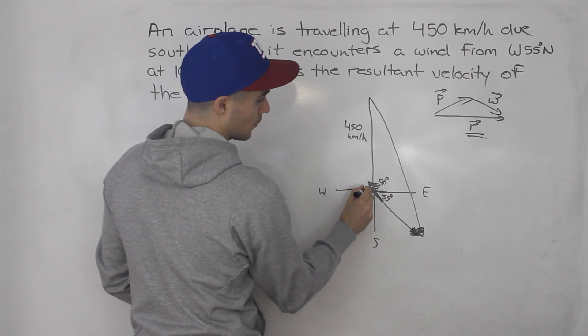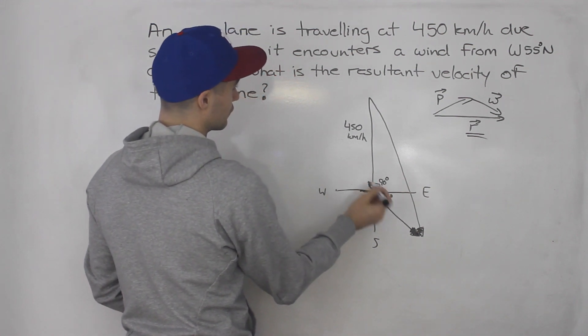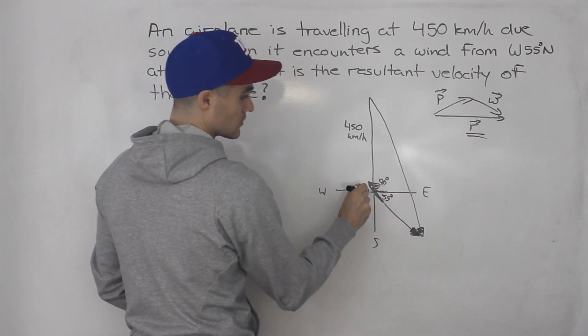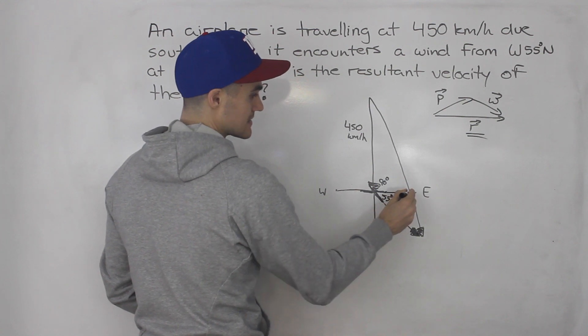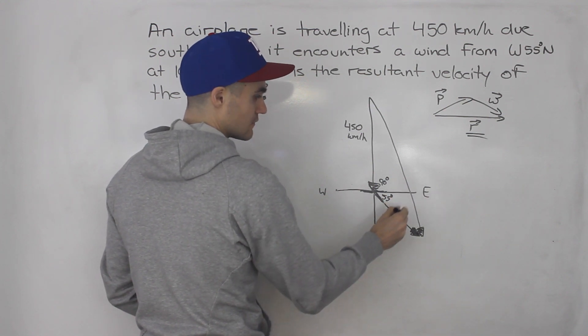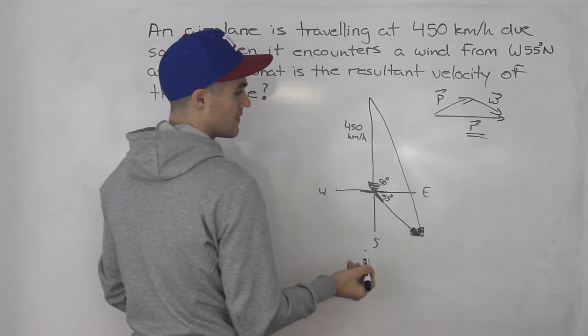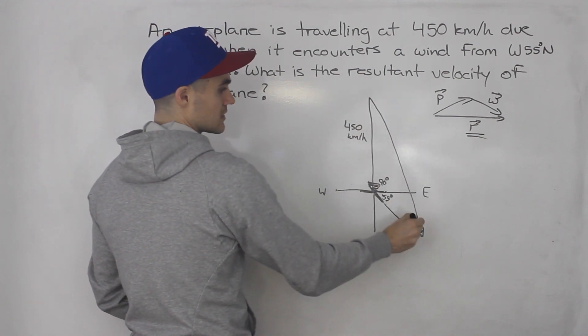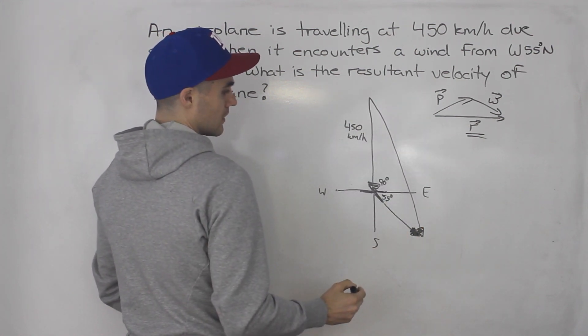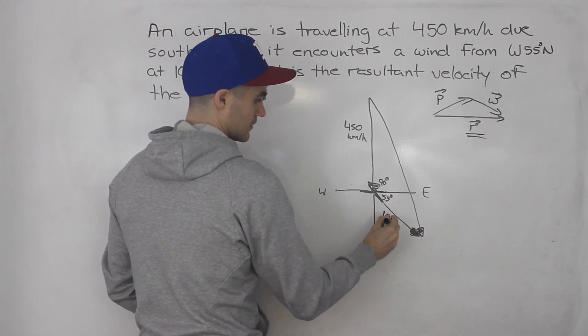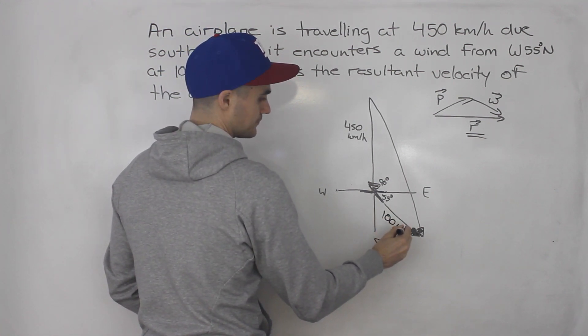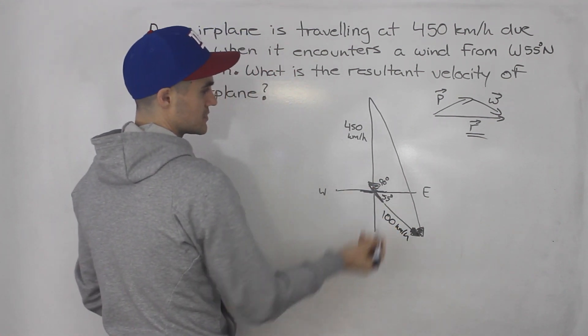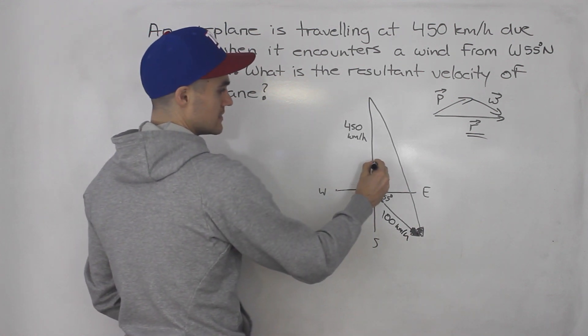But in this case, we're just simply asked for the resultant. So we got the plane going south, then we got the wind coming from west 55 degrees north, so that's the same as going towards east 55 degrees south. And then the resultant is going to be here, right? And then the wind has a speed of 100 kilometers per hour.